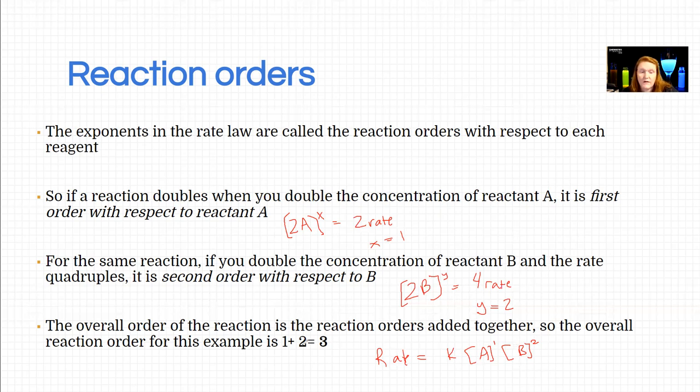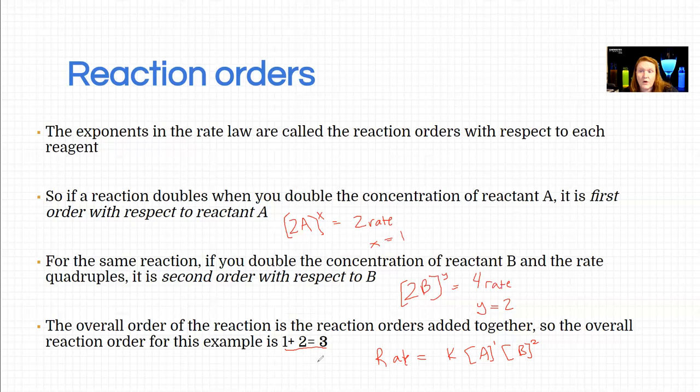The overall order gives you a sense for how difficult the reaction is. Zero, first, second order are relatively common. It means you have zero molecules that need to be oriented correctly with enough energy, or you have one, or you have two. An actual tertiary reaction like this is pretty uncommon, because it would mean you'd have to have three particles oriented exactly right, with just enough energy to react, not too much because they'll bounce off, not too little because they don't have enough energy to break bonds.